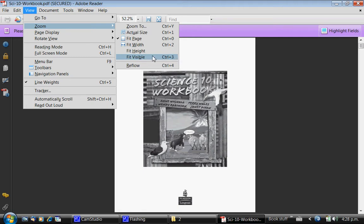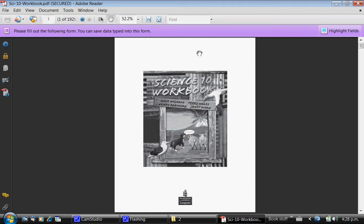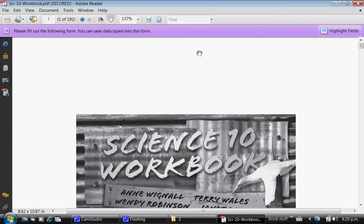This Fit Visible here is one of the most useful because it instantly, I'm just typing Ctrl-3 here, gives you the largest practical view of a page. This will go from the typing on one side to the typing on the other side and make it as large as you can for kids to see in the classroom.